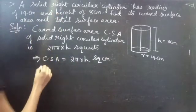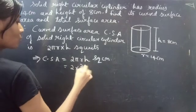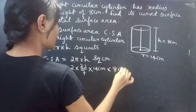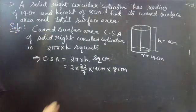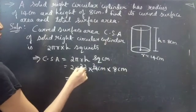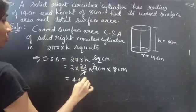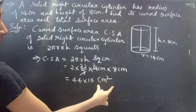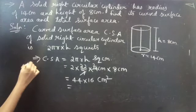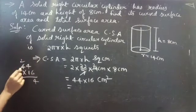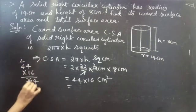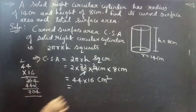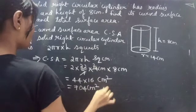CSA equals 2 into 22/7 into r equals 14 centimeters into height 8 centimeters. Centimeter into centimeter gives centimeter square. So 7 cancels with 14 giving 2, and 2 into 22 is 44. Then 44 into 16 — 4 sixes are 24, carry 2, 4 fours are 16 plus 2 is 18 — giving 704. The answer is 704 centimeter square.